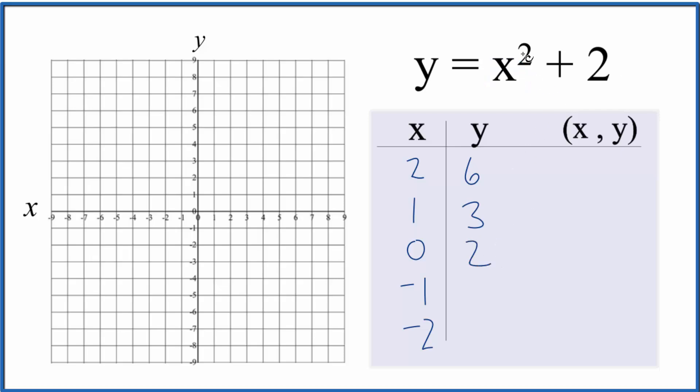0 plus 2 is 2. For negative 1, negative 1 times negative 1 gives us a positive 1. So we have 1 plus 2 gives us 3. And then negative 2, negative 2 times negative 2 is positive 4, plus 2, we get 6. So these are the points that we'll graph for the equation y equals x squared plus 2.